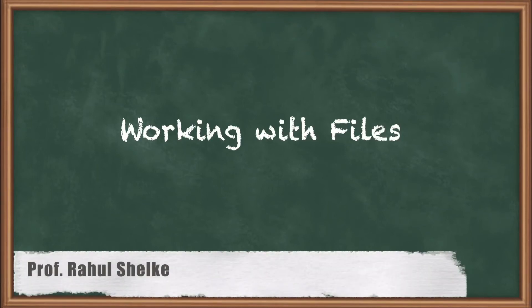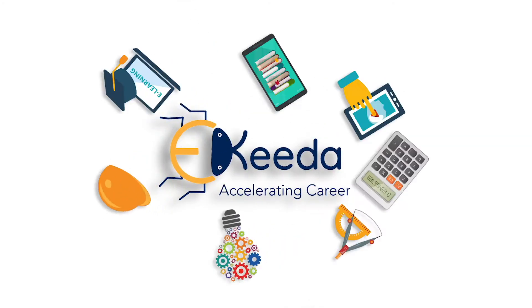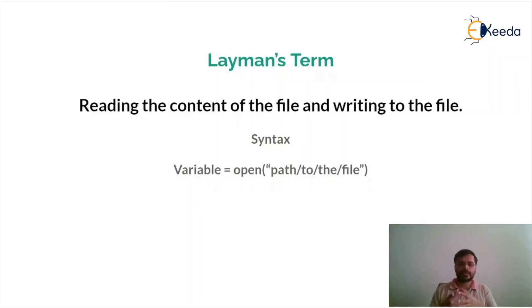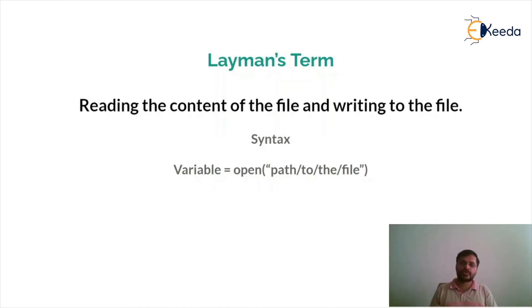In this lesson, we are going to see how to work with files. The target of this lesson is to read the content of a file and write into a file. For that, the syntax that Python gives us requires us to provide a variable name — basically the variable to which we want to store the file content — and then we use an open function, passing the file path including the file name, so it can open that file and give us the file object. Now let's see a working example.